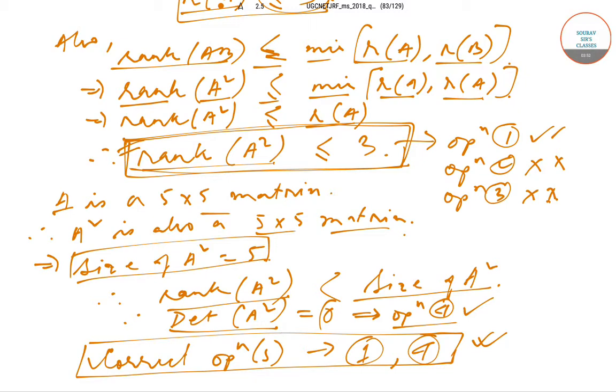So the correct options are Option 1 and Option 4. We have solved Question 73 from the CSIR UGC NET paper of June 2018. We will solve the next questions in subsequent videos. Keep watching Softest Classes for more solutions and content. Thank you very much.